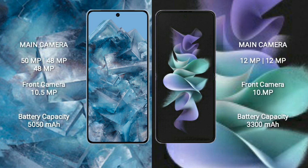Google Pixel 8 Pro features a triple rear camera setup: 50MP + 48MP + 48MP, and a 10.5MP front camera. Samsung Galaxy Z Flip 3 features a dual rear camera setup: 12MP + 12MP, and a 10MP front camera.